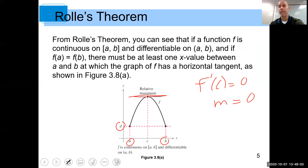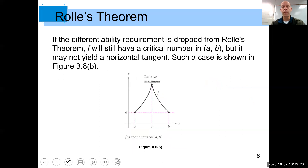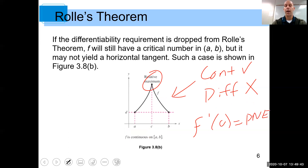When f prime of c equals zero, the slope of the tangent line is zero — that's what we call a relative maximum, as we already know from section 3.3. So Rolle's Theorem tells us: if the function is continuous and differentiable, and f of a equals f of b, then there has to be some point c in between where the first derivative equals zero. Now, if the function is not differentiable — in this case the function is continuous but not differentiable — then you cannot apply Rolle's Theorem.